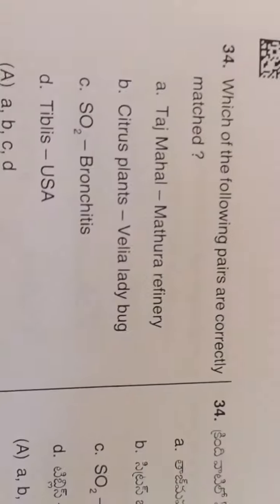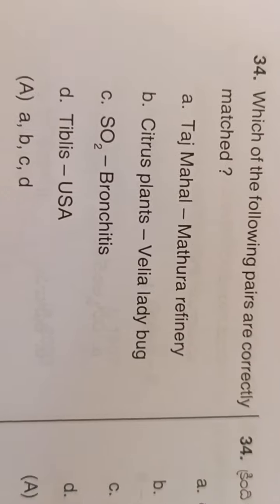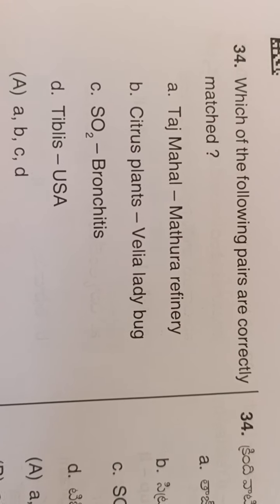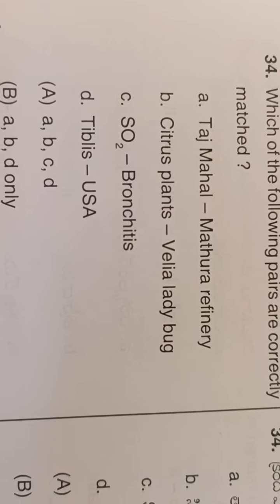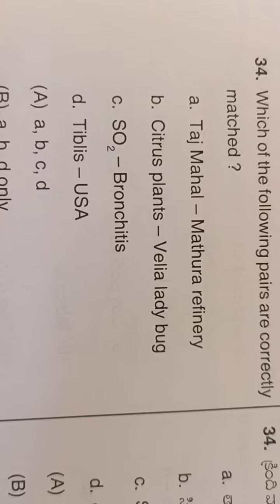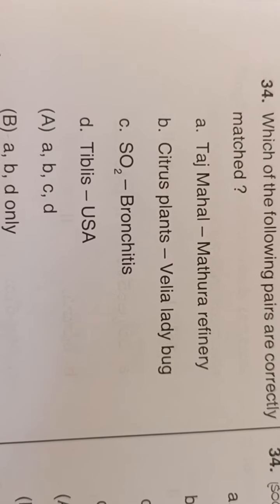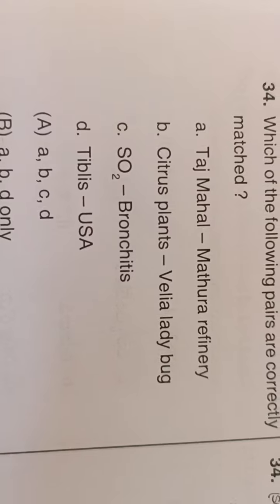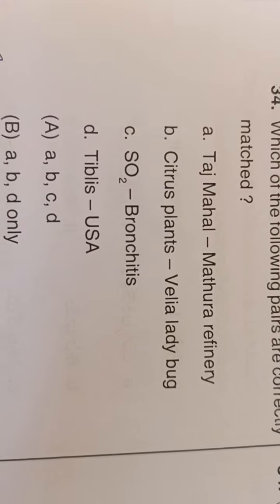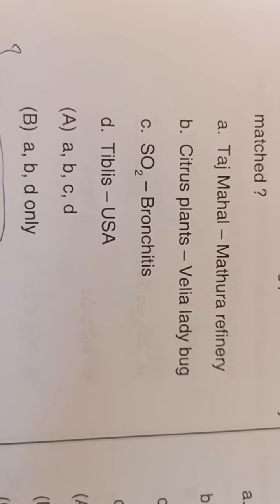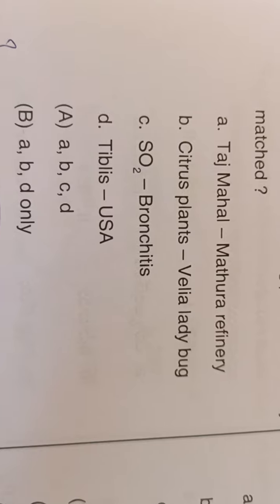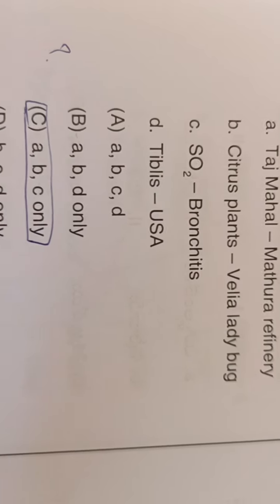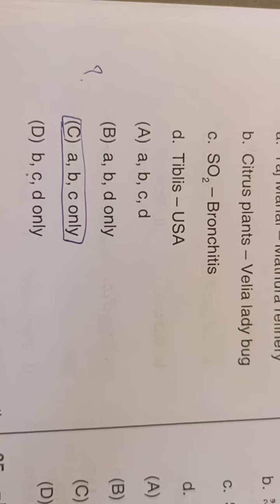Match the following: Taj Mahal is affected by the Mathura refinery factory; Citrus plant is protected by Wilia ladybug; Sulfur dioxide affects Bronchitis. Note: Tbilisi is the capital of Georgia, not in USA. The answer is option C.